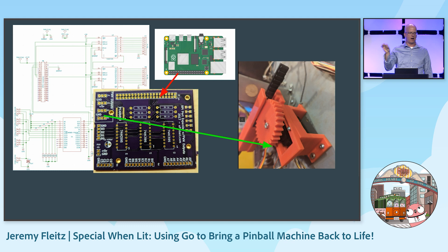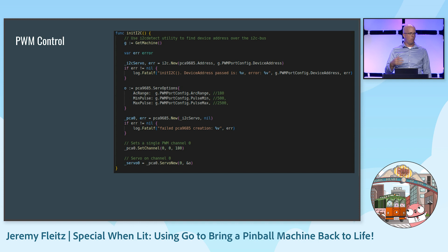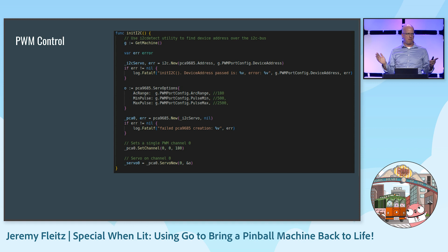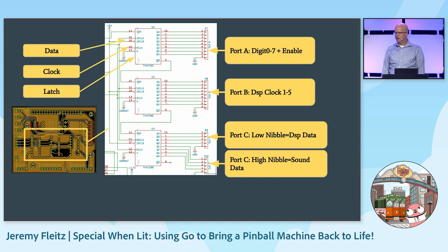I'm using an RC servo to make the goalie move back and forth — exactly what Roger was talking about. To do this, I'm using I2C from the Raspberry Pi to control the servo. You can use i2cdetect to find what I2C device is connected and use that as the address in the I2C struct. In the servo options, you set the arc range — the complete range you want the servo to move — and also the min and max pulse in microseconds: 500 microseconds for the small pulse and 2500 microseconds for the largest pulse sent to the servo.